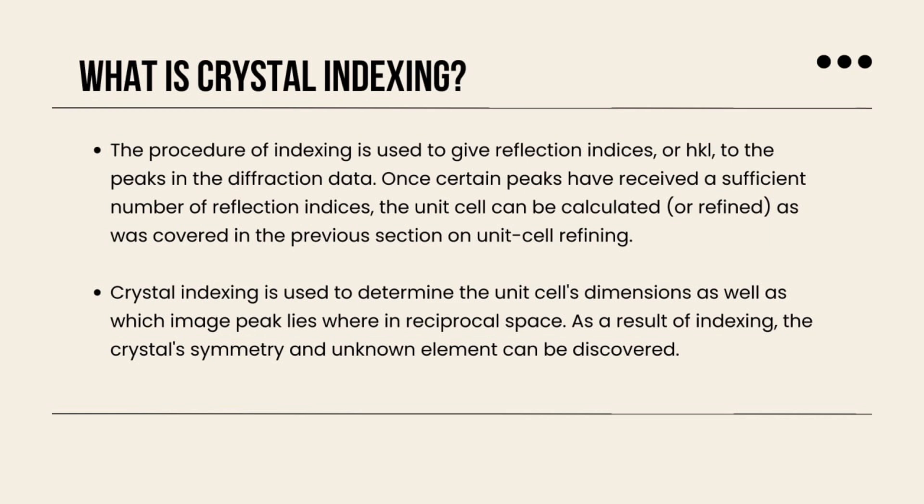The procedure of indexing is used to give reflection indices, or HKL, to the peaks in the diffraction data. Once certain peaks have received a sufficient number of reflection indices, the unit cell can be calculated or refined, as was covered in the previous section on unit cell refining.